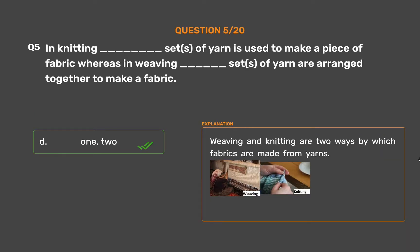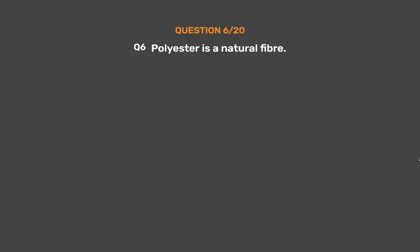Weaving and knitting are two ways by which fabrics are made from yarns.